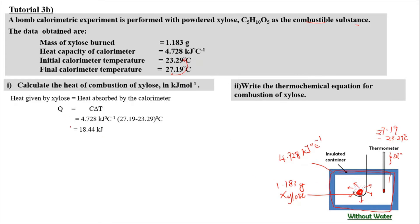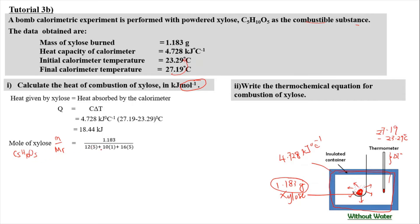That 18.44 kJ is the heat released by xylose for only 1.183 g. We need to find the heat for 1 mole of xylose. First, find the number of moles: moles = mass / molar mass = 1.183 g divided by the molar mass of C5H10O5, which is (12×5) + (1×10) + (16×5) = 150 g/mol. This gives 7.89 × 10⁻³ mol of xylose, which produces 18.44 kJ of energy.